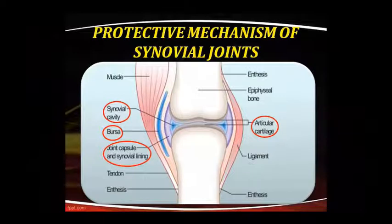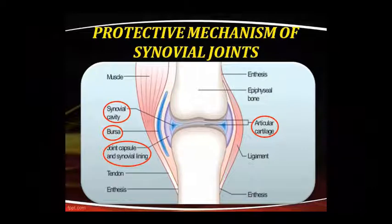There are many diseases that affect the joints, and they are called arthritis. In the diagram, muscles are shown, the bone's epiphyseal end is shown, the synovial cavity and joint are shown, and there is also a ligament.